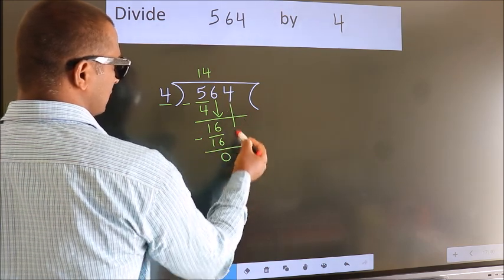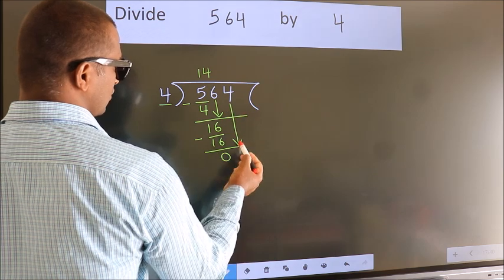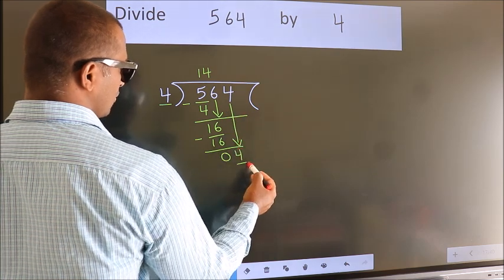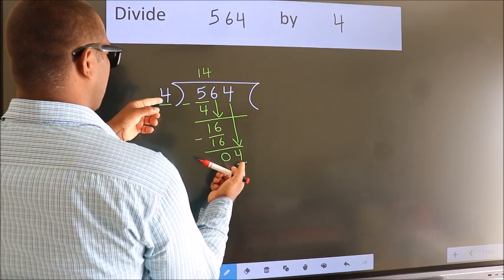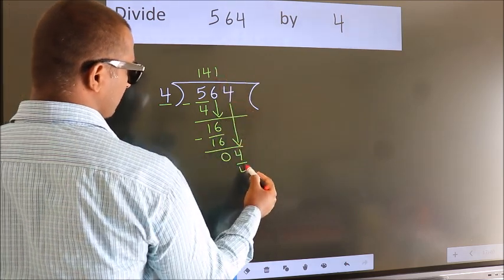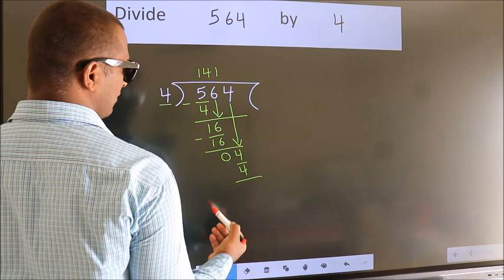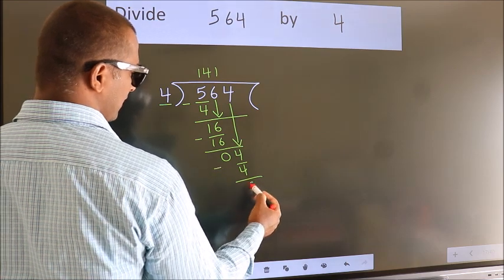After this, bring down the beside number. 4 down, so 4. When do we get 4 in the 4 table? 4 once is 4. Now we subtract, we get 0.